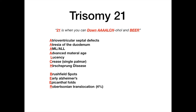The four A's stand for: atrioventricular septal defect (ASD), atresia of the duodenum (duodenal atresia), AML and ALL, and advanced maternal age. L is for nuchal translucency (lucency), C is for single palmar crease, H is for Hirschsprung disease. Then BEER stands for: Brushfield spots, early Alzheimer's disease, prominent epicanthal folds, and Robertsonian translocation.